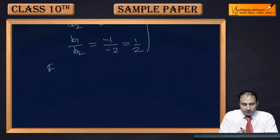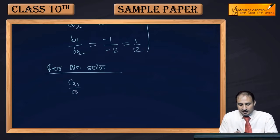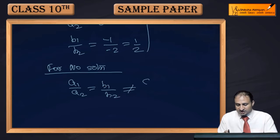For no solution, the condition is a1/a2 = b1/b2 ≠ c1/c2. So 1/2 = 1/2 ≠ 5/k.